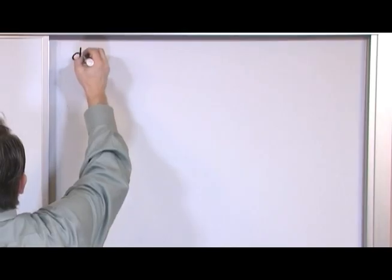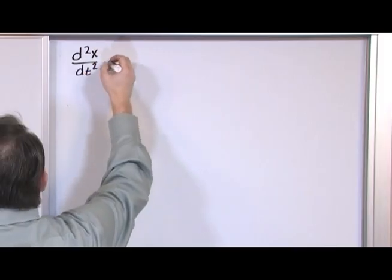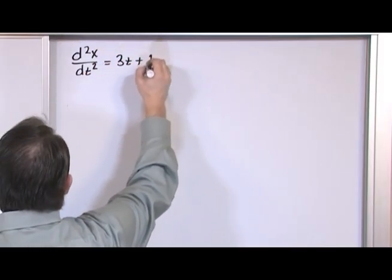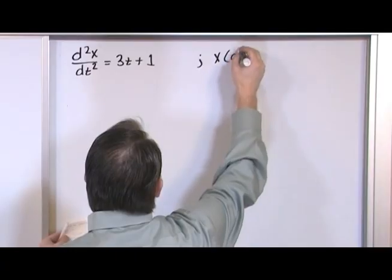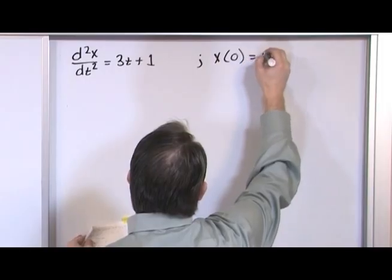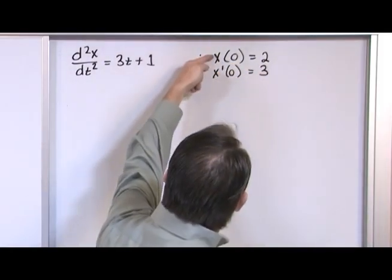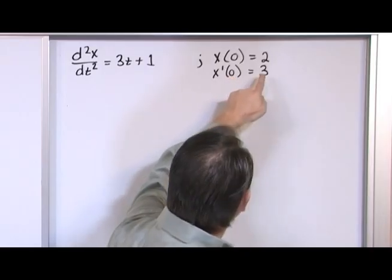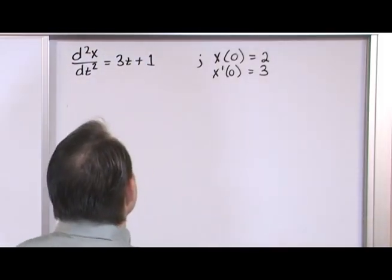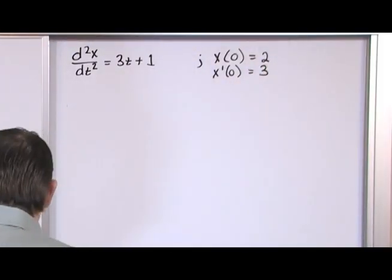Let's find the general and the specific solution to the following differential equation: the second derivative of x with respect to time equals 3t plus 1. This is your differential equation, and your initial conditions are: at time equals 0, the position equals 2, and at time equals 0, the velocity equals 3. This is the position and this is the velocity because this is the derivative of x. The initial conditions are used later after you get the general solution.